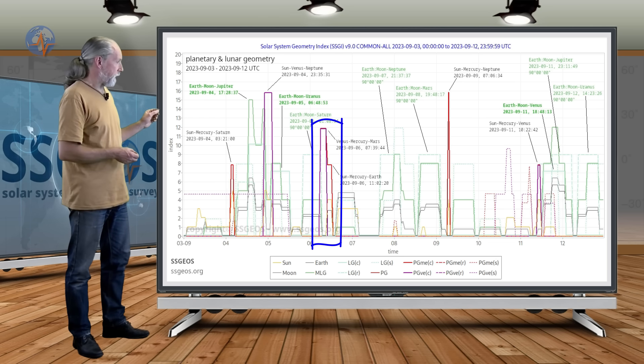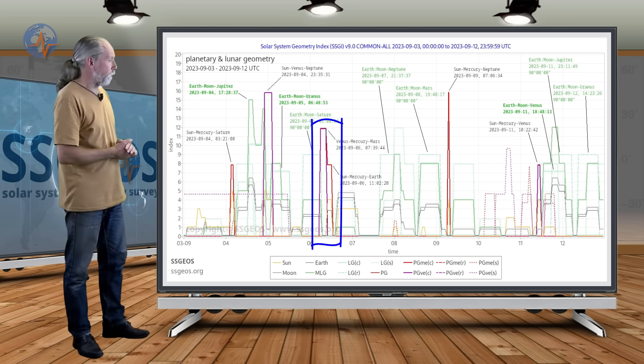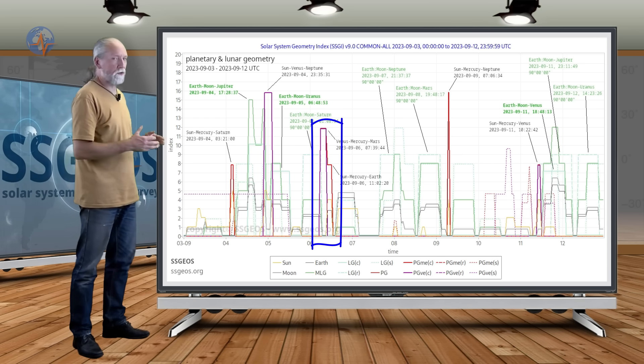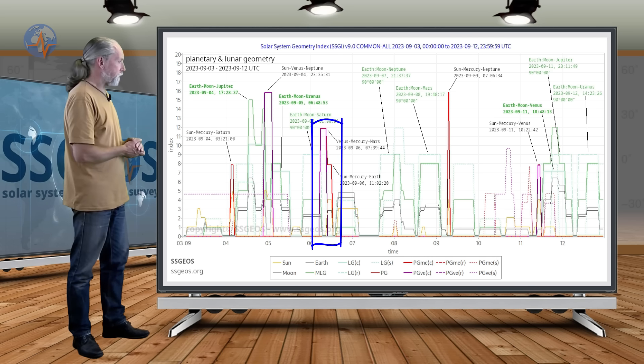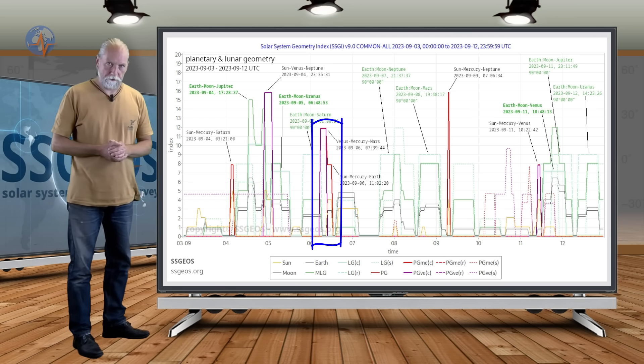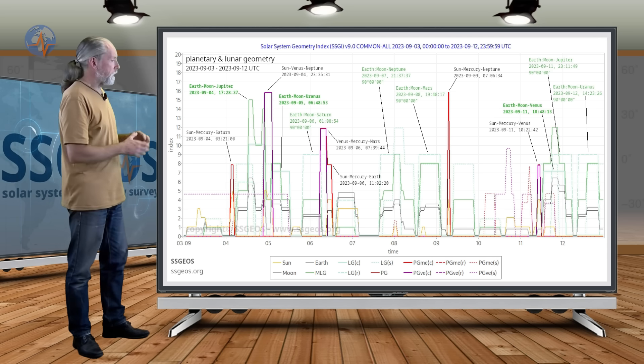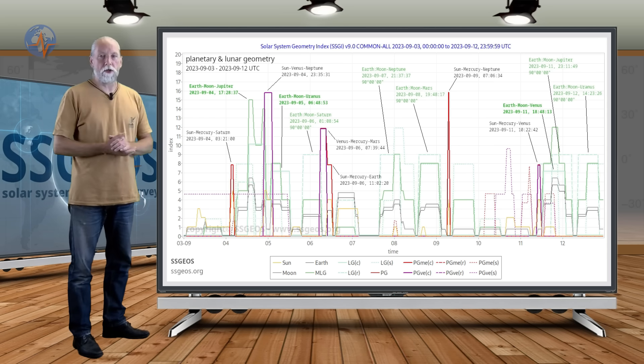Almost at the same time, there are only a few hours, about three or four hours in between—Sun-Mercury-Earth. So in total we have four planetary conjunctions from the 4th to the 6th.